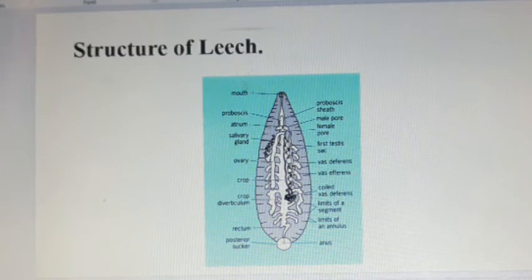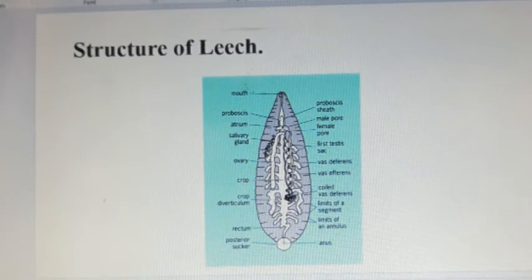Leeches are dorso-ventrally flattened and tapered anteriorly. They have 34 segments, but the segments are difficult to distinguish externally because they have become secondarily divided. Several secondary divisions called annuli are in each true segment. Anterior and posterior segments are usually modified into suckers, modifications of body wall musculature and coelom that influence pattern of leech locomotion.